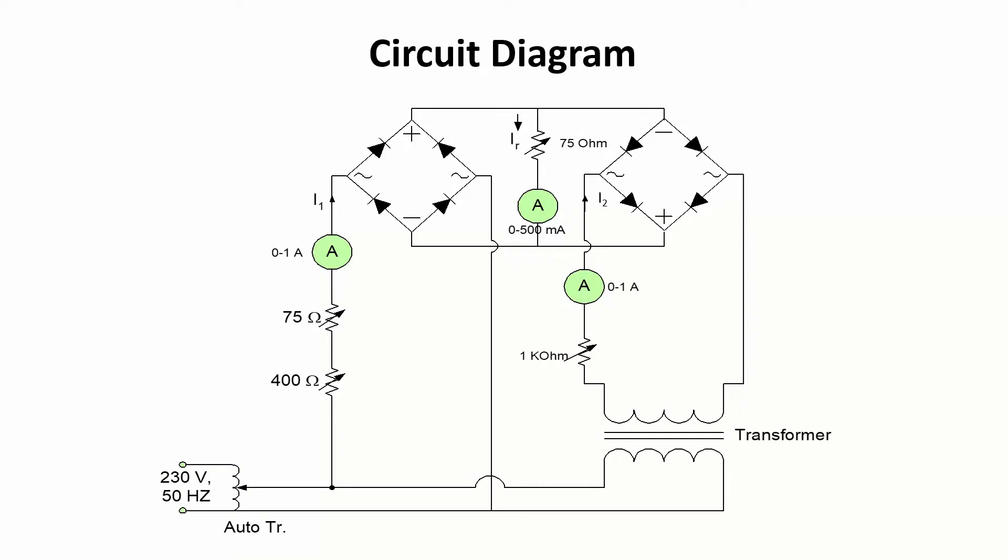Shown here is the circuit diagram of the experiment to be performed. The circuit comprises an auto transformer which is connected to the source of 230 volts 50 Hertz. From this auto transformer, the signal at the secondary side is fed to one bridge of the amplitude comparator with rheostats connected in series. The same supply is given to a two winding transformer which is a step down transformer, and this is connected to the second bridge of the amplitude comparator.